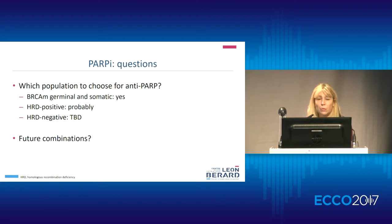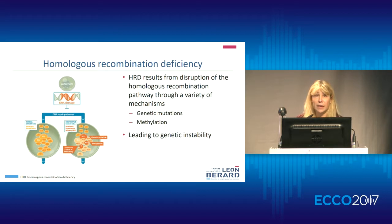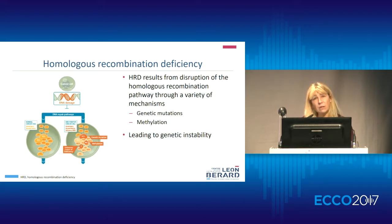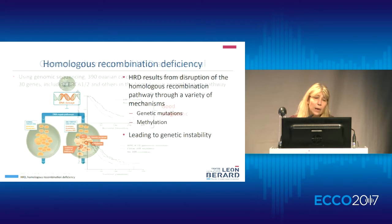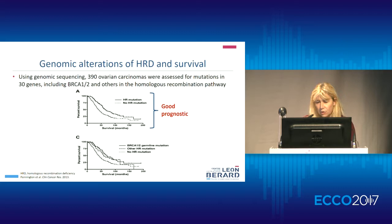My point is now to focus on homologous recombination deficiency - how to define this population of patients. Homologous recombination deficiency is something quite easy to understand. It is induced by genetic mutation, but also a lot of unknown mechanisms. We know that in cancer cells, this deficiency in homologous recombination induces genetic instability. Pennington reports, in more than 400 ovarian cancer cases, she looked at the BRCA mutation but also all the genes involved in homologous recombination.